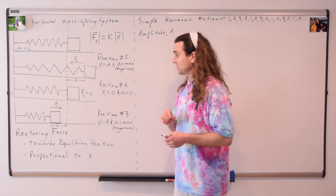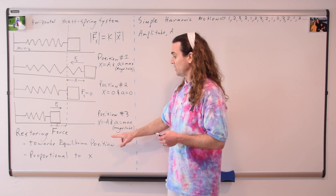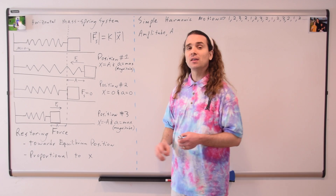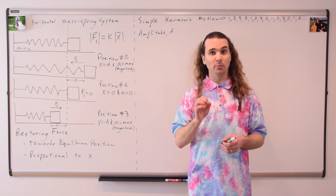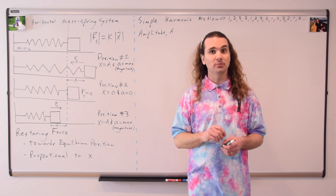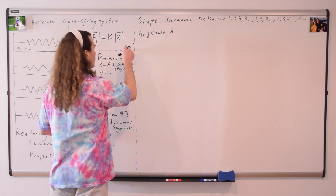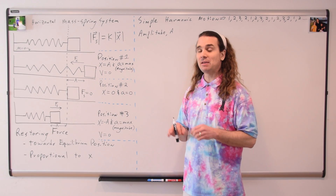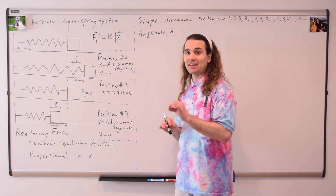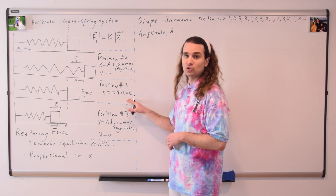The block changes directions at positions one and three. Therefore, the velocity there will be zero, which means the block will have a maximum magnitude velocity at position two.